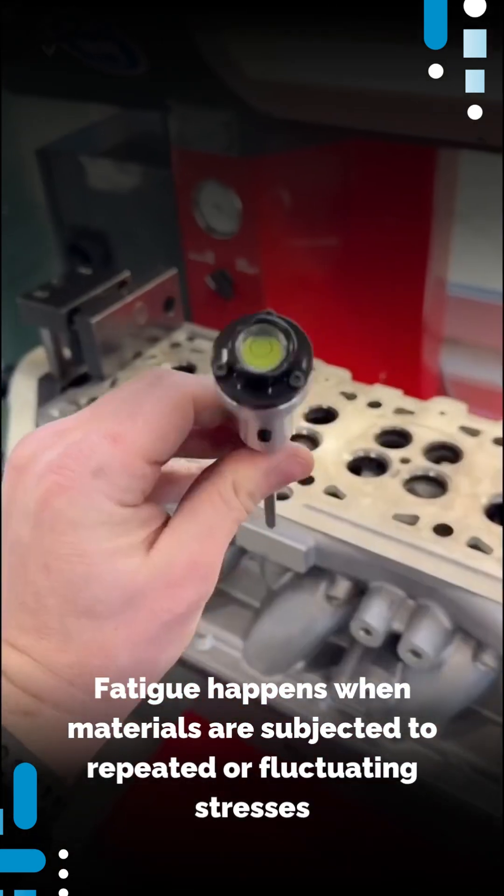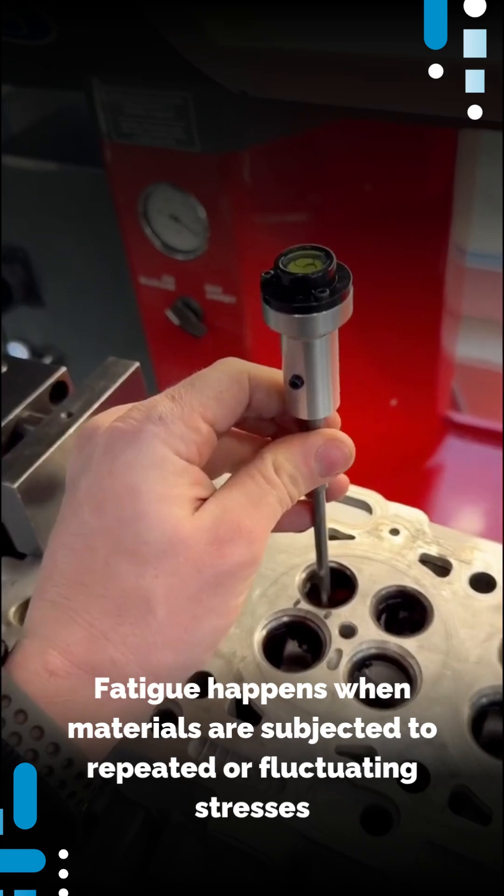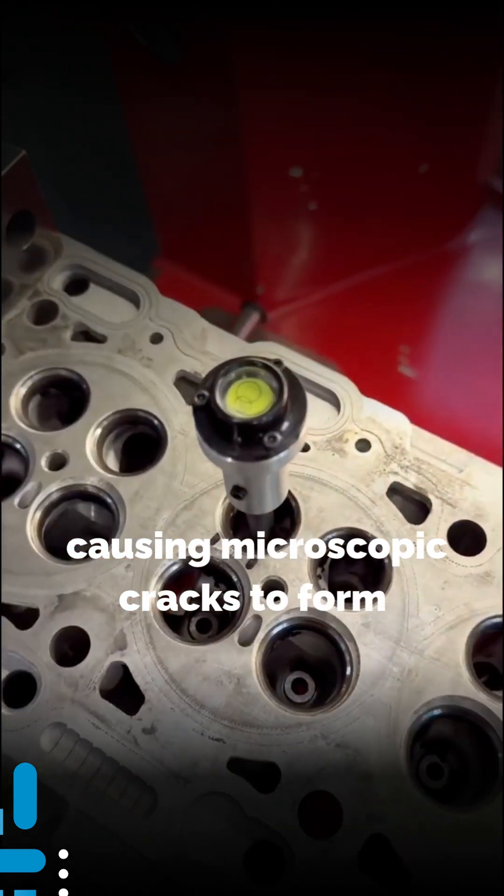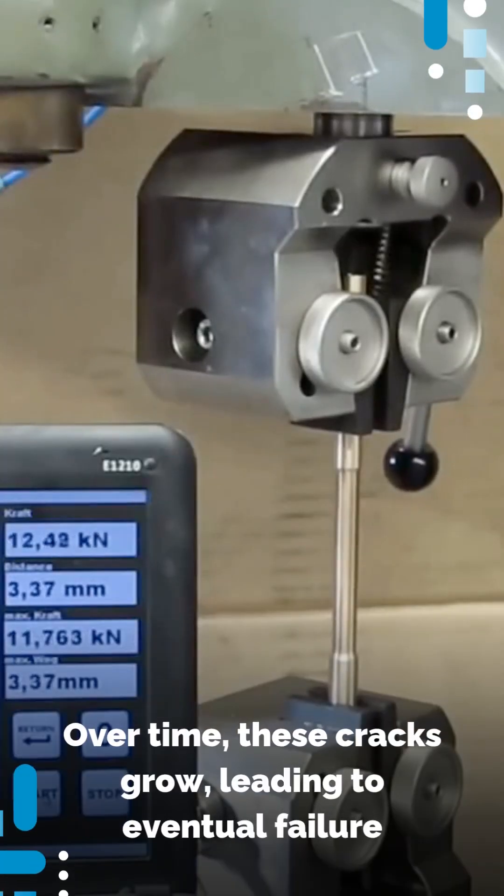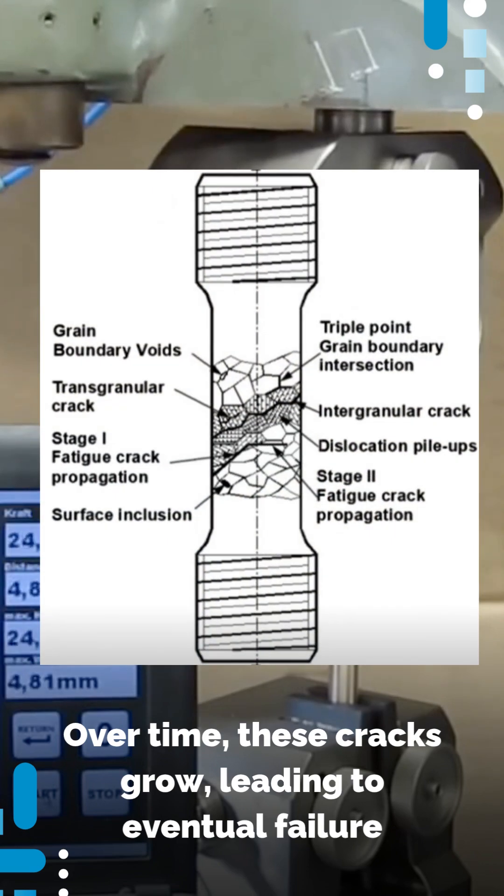Fatigue happens when materials are subjected to repeated or fluctuating stresses, causing microscopic cracks to form. Over time, these cracks grow, leading to eventual failure.